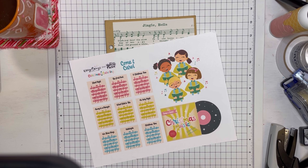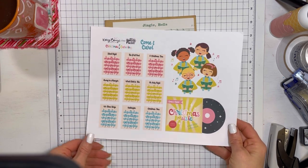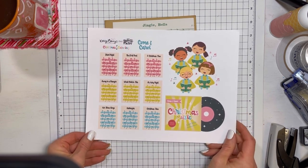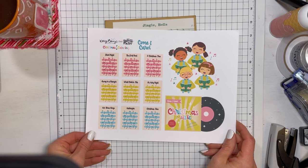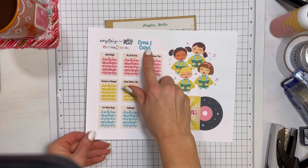Today we are going to be working on documenting our December and the Make It Merry album with a challenge. However, I don't have a prompt that I'm going to be using today. I am going to be featuring the Kelly Bangs for Illustrated Faith Christmas Caroling, Come and Carol.